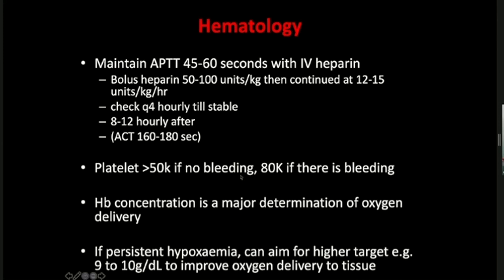When on ECMO, because of bleeding risk, we keep platelet levels a bit higher. Our internal guidelines allow tolerance of a platelet count above 50K if there is no clinical evidence of bleeding; if there is bleeding, we aim for at least 80K. For significant bleeding sites such as intracerebral bleed, we aim for at least 100K. For hemoglobin, we keep it in a higher range than conventional ICU practice — around 8 to 9, or up to close to 10 if the patient has poor oxygen delivery — to maximize oxygen content through the ECMO circuit.